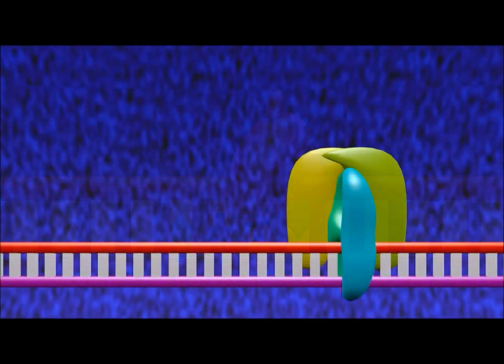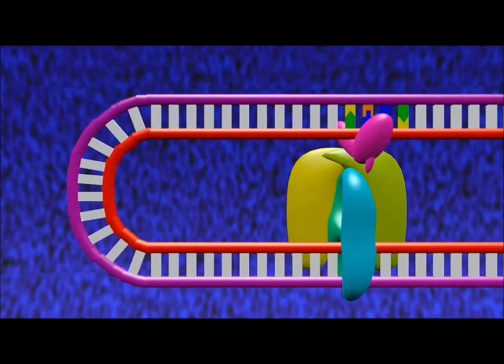In order for MutH to become activated, it needs to bind with MutL. This causes the DNA to bend.